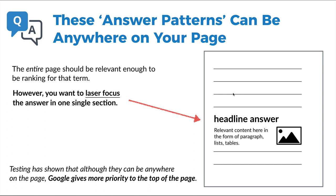That's another trick you could use right away. You also want to laser-focus the answer in one single section. If people are asking 'what is the best food?' and you start answering a bit near the top, a bit in the middle, and a bit at the end, Google won't really understand. You have to put all the answers, all the related words, in one very specific area. Then Google is going to pick up that area and say, 'this is the answer.' If you just write a whole article about it spread out, Google is going to get lost and confused.